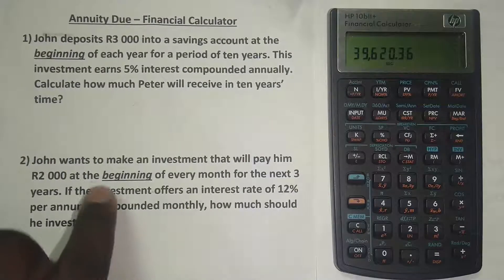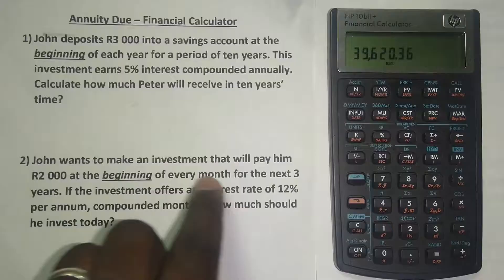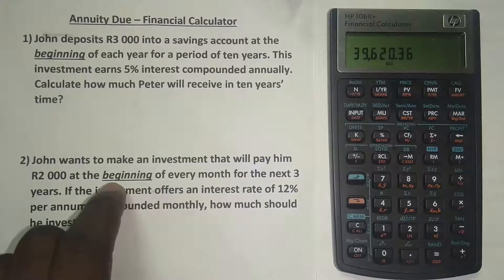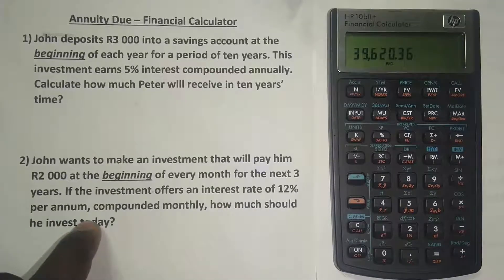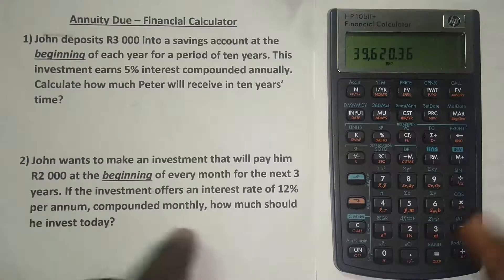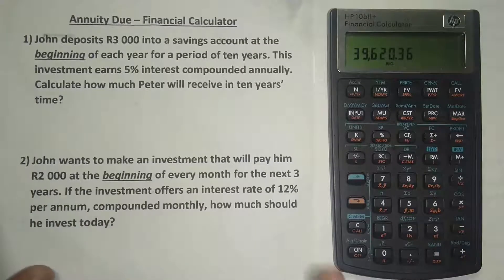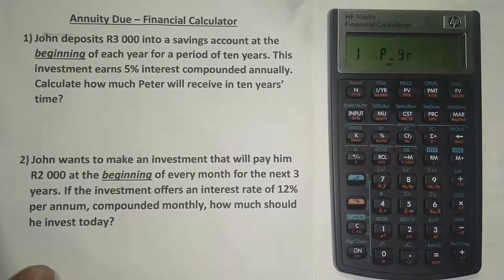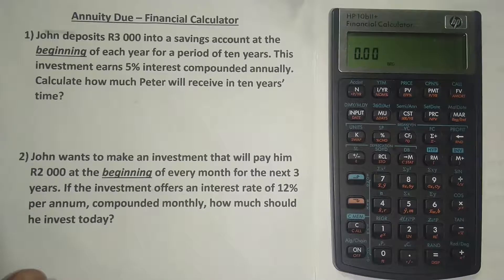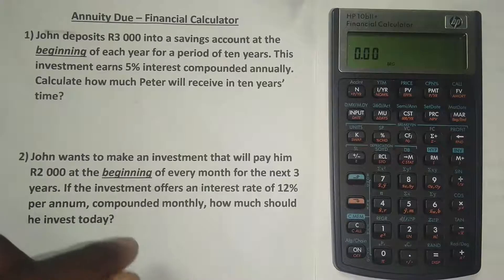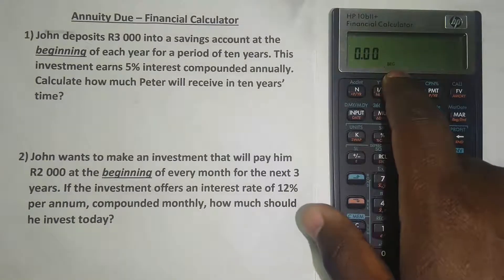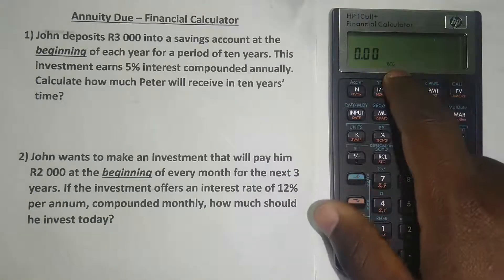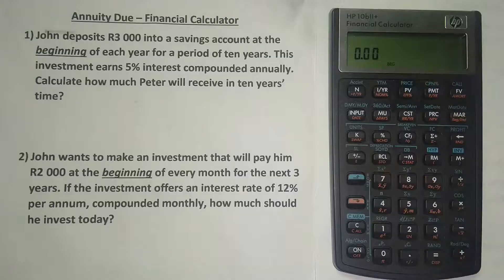Now let's go to our second example. John wants to make an investment that will pay him 2,000 rand at the beginning of every month for the next three years. The investment offers an interest rate of 12% per annum compounded monthly. How much should he invest today? Before we continue, clear the calculator memory by pressing the orange button then C. It's still an annuity due, so we leave the mode at Begin.